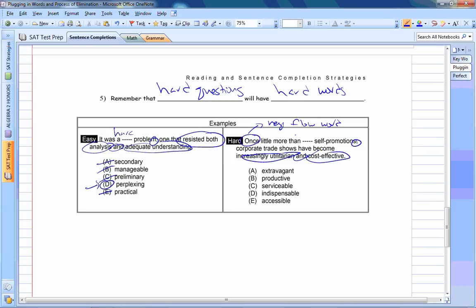So utilitarian means utility, like make a good use, cost effective, being practical. So you probably want to say once a little more than impractical, meaning not practical. Or maybe fancy, lavish, something we don't really need. So extravagant can work, because I think extravagant is probably the opposite of cost effective. But productive would be similar to me to utilitarian cost effective. So serviceable, indispensable means something that's valuable. Accessible, that doesn't really work either. So extravagant would be most anonymous to these two words here. So the answer has to be A for that one.